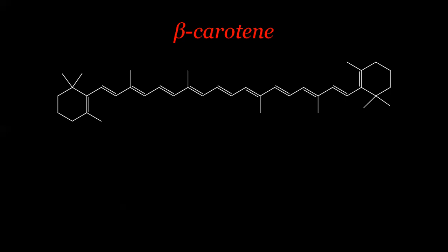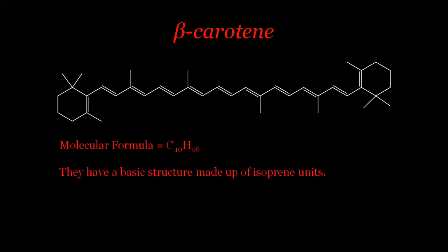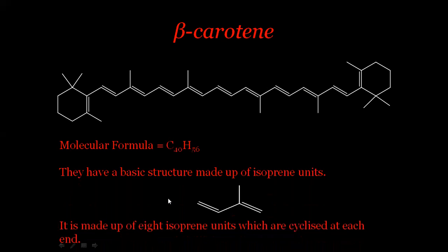The molecular formula of beta-carotene is C40H56 — it is a pure hydrocarbon. Its structure is made up of repeating isoprene units; if you count them, there are eight isoprene units in total, which get cyclized at each end of the beta-carotene molecule.